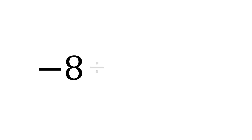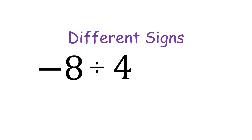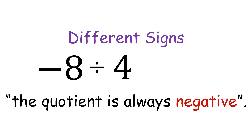Next, negative 8 divided by positive 4 — they have different signs, a negative and a positive. If they have different signs, the quotient is always negative. So negative 8 divided by positive 4 is 2, and it is negative.